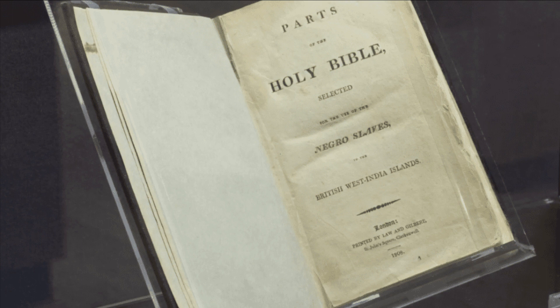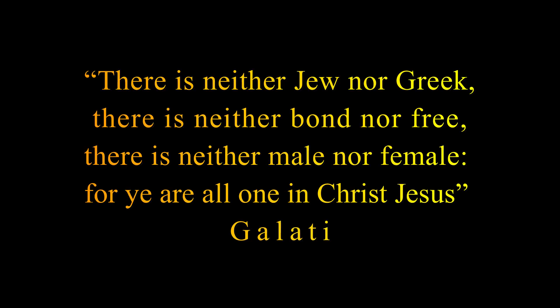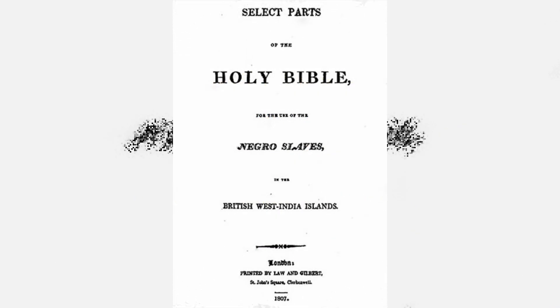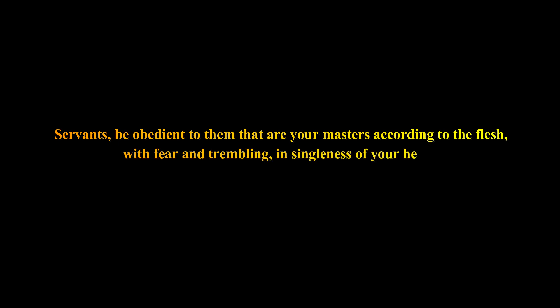Passages that emphasized equality between groups of people were also excised. This included: 'There is neither Jew nor Greek, there is neither bond nor free, there is neither male nor female, for ye are all one in Christ Jesus' — Galatians 3, verse 28. The slave Bible also doesn't contain the Book of Revelation, which tells of a new heaven and earth in which evil will be punished. In contrast, one of the passages that remained was one proponents of slavery loved to cite: 'Servants, be obedient to them that are your masters according to the flesh, with fear and trembling, and singleness of your heart, as unto Christ' — Ephesians 6, verse 5.